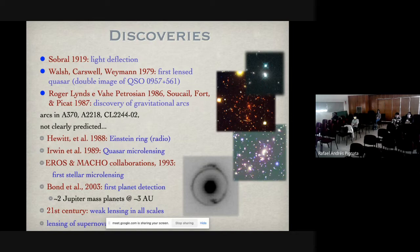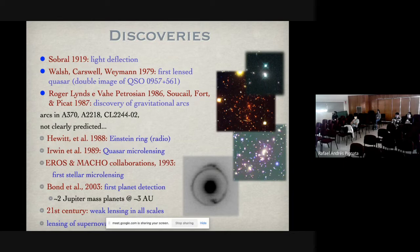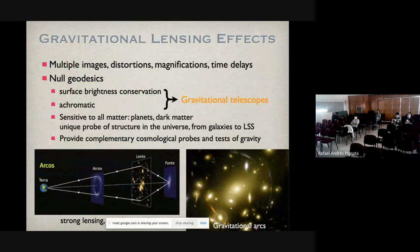The first Einstein ring was detected in the radio in 1988. Then came quasar microlensing — the lensing of quasars by stars in a foreground galaxy, which we'll mention tomorrow. In 2003 came the first discovery of compact objects in our galaxy — stars, brown dwarfs, black holes — lensing background stars. Also in 2003, the first discovery of a planet being lensed. In the 21st century, there have been so many expressions of this phenomenon: weak lensing on all scales, strong lensing of galaxies and clusters, microlensing in various forms, astrometric microlensing, lensing of transient objects like supernovae, and strong lensing of individual stars in very distant galaxies.